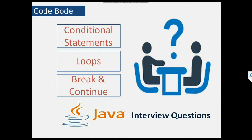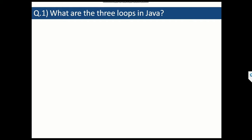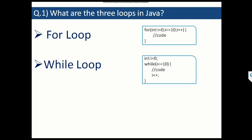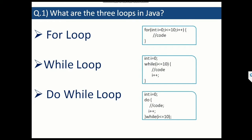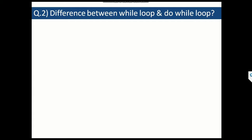The first question is very simple: what are the three loops in Java? If you're familiar with Java or have gone through the recent videos, we know that the three loops are the for loop, while loop, and do-while loop. All of them vary in their syntax, and for and while are almost similar in working, but there is a difference between while and do-while in the way it works.